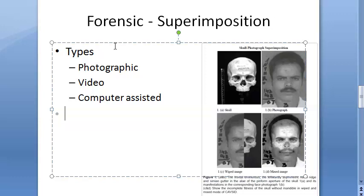The procedure begins by enlarging the photograph of the missing person to natural size, using standard reference points. There are very specific markings on this photograph — the ear, the nose, etc. From the photo, you prepare a negative, scaling it to natural size.